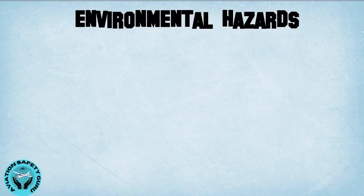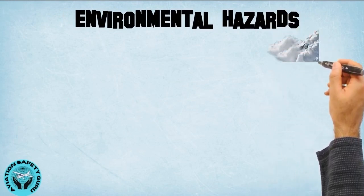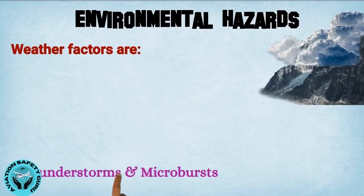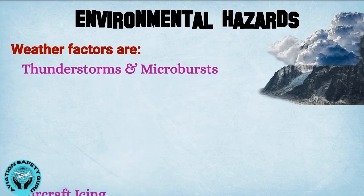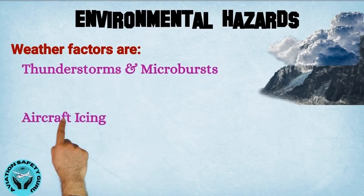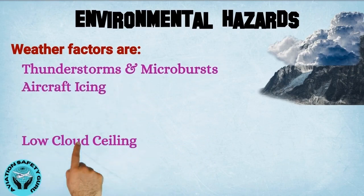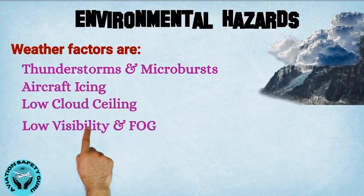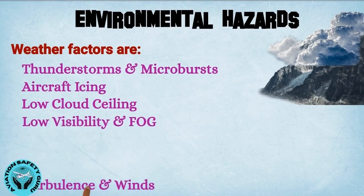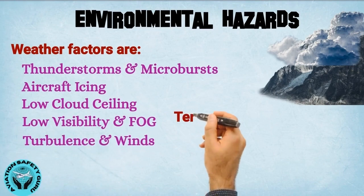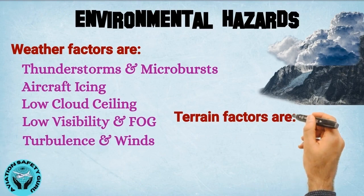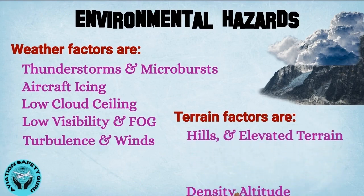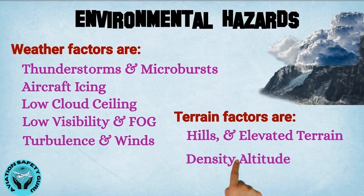Environmental hazards include natural and man-made hazards. Weather factors include thunderstorms and microbursts, aircraft icing, low cloud ceiling, low visibility and fog, and turbulence and winds. Terrain factors include hills and elevated terrain, density altitude, and over-water operation.